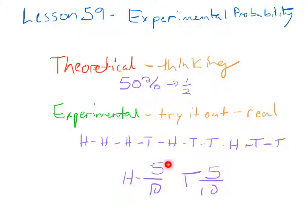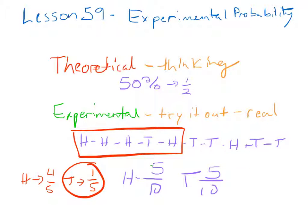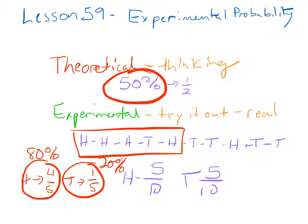However, if we had stopped the experiment after only 5, our experimental probability for heads would have been 4 out of 5 and our probability for tails would have been 1 out of 5. So in this situation, this is 80% and this is only 20%, whereas we would expect to see 50%.